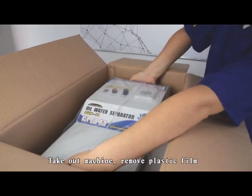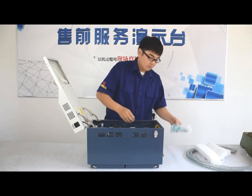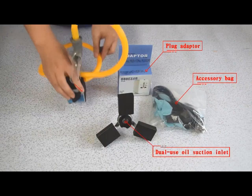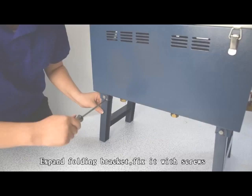Remove plastic film and open machine cover. Take out accessories including dual use oil suction inlet, plug adapter, magnetic base, filter bottle, and wrench. Dismount M4 screw, expand folding bracket, and fix it with screws.